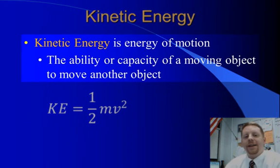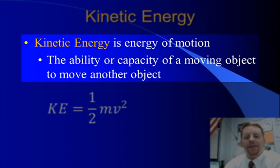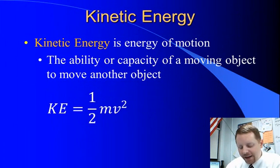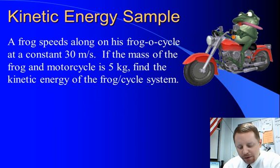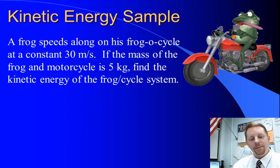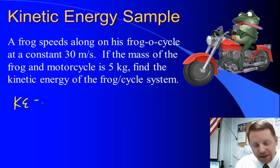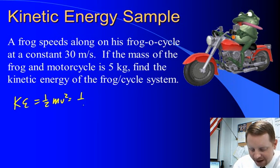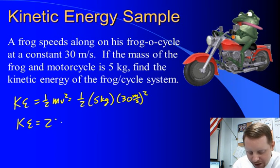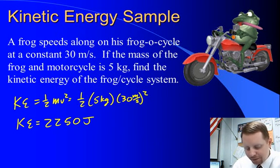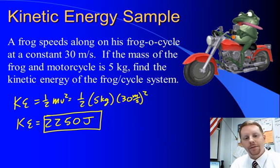Now let's start with kinetic energy. We've said kinetic energy is energy of motion, so it's the ability or capacity of a moving object to move another object. We calculate kinetic energy using the formula KE equals one-half times the mass times the square of the velocity. As an example, a frog speeds along on his frogo cycle at a constant 30 meters per second. If the mass of the frog and motorcycle combined is five kilograms, kinetic energy is one-half times five kilograms times 30 meters per second squared, giving a total kinetic energy of 2250 joules.